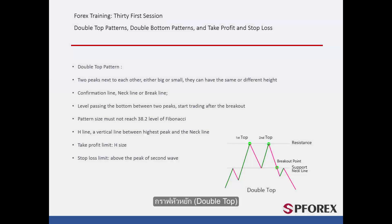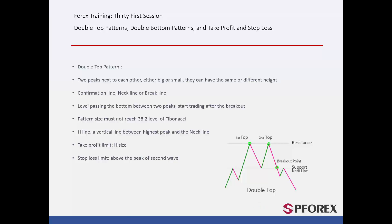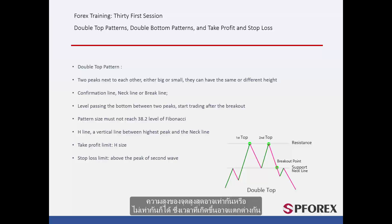Double Top Pattern: When two peaks on an uptrend are formed next to each other, a double top pattern can be drawn by placing two level lines on the highest peak, in addition to the valley between the two peaks. The height of peaks can be equal or different, while their forming time may differ.